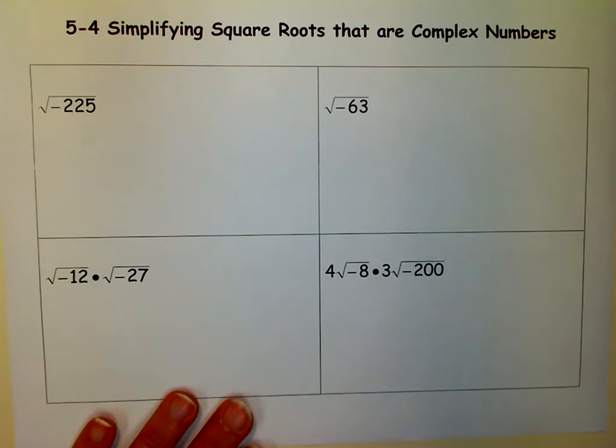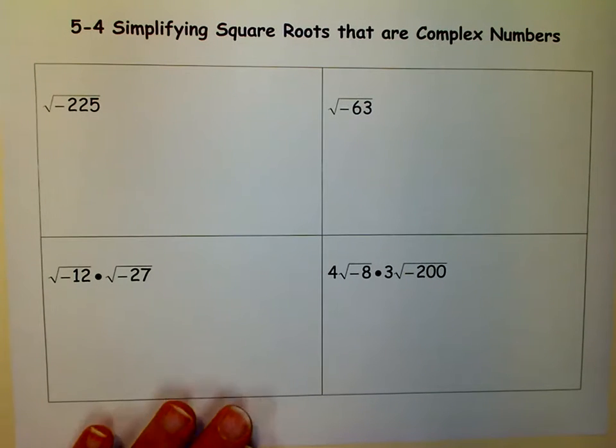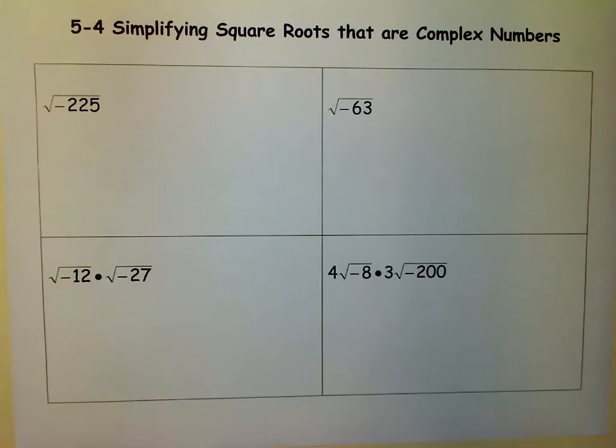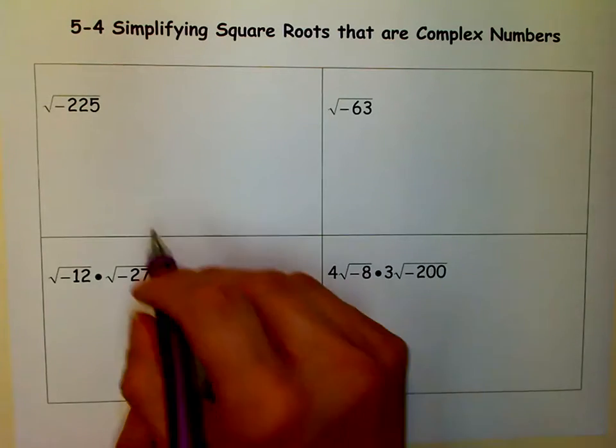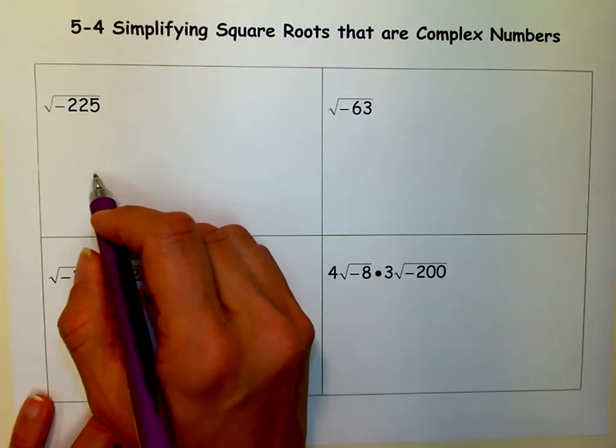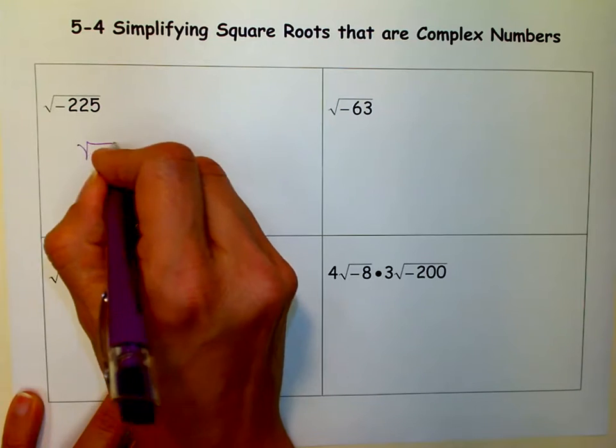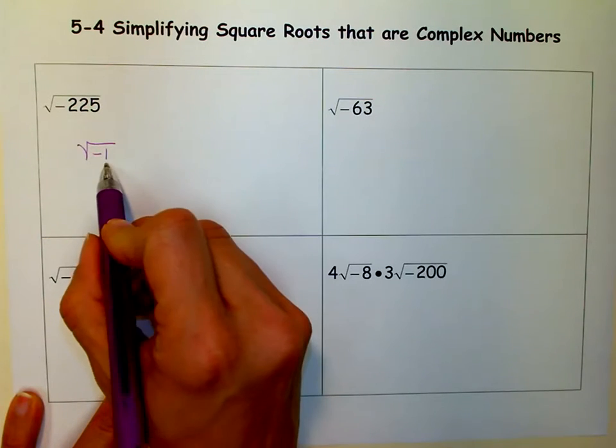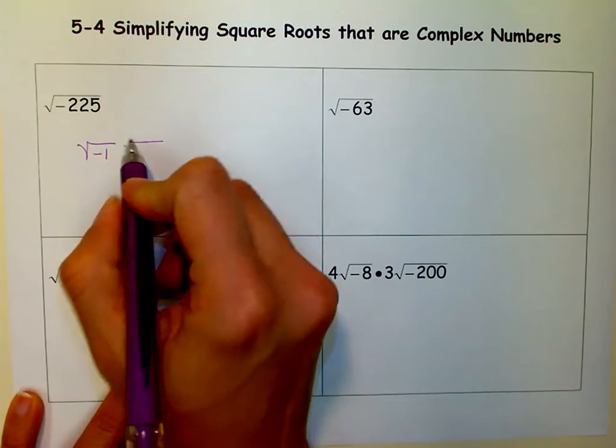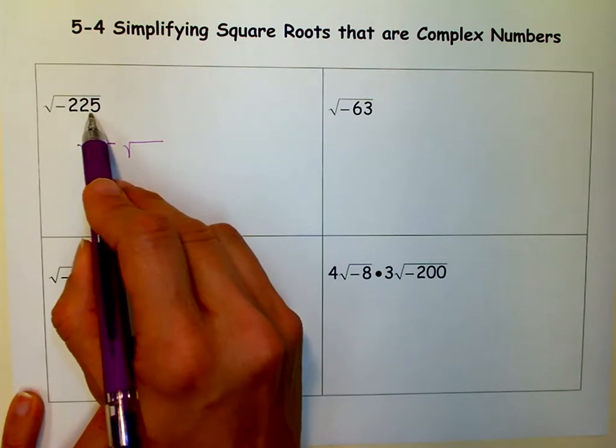So when you first learn to simplify square roots, they tell you you can't simplify square roots that are negative because you haven't learned about imaginary numbers yet. But now that you've learned about imaginary numbers, you can do that. So what we're going to do is we're going to split up our square root just like we would when we simplified square roots. But we always use one of our factors as negative 1.